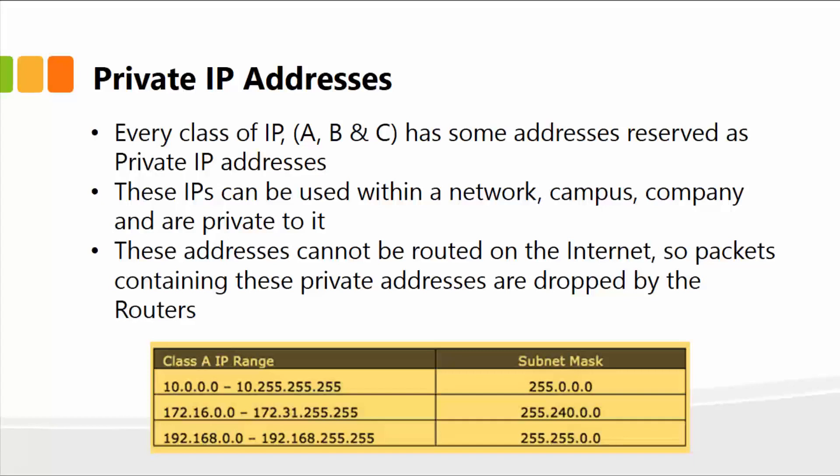Data packets containing these private addresses are dropped by routers. A router is simply a physical device that checks where to send the data — where to send the next signal. The router sees the IP address coming from the sales department, for example, and recognizes that this IP address belongs to a private organization. Hence, it cannot be distributed publicly on the internet.